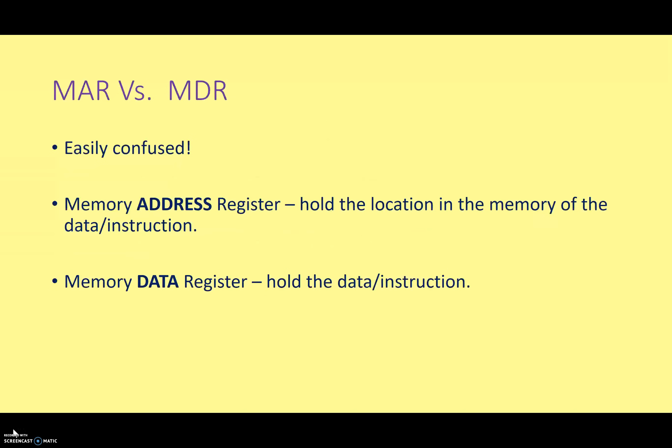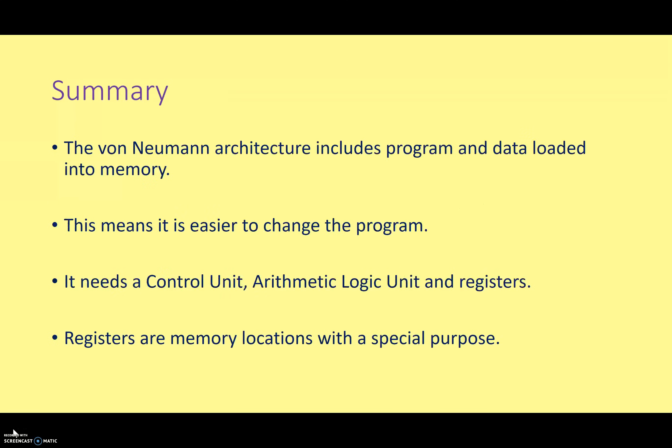It can be a little confusing when we talk about registers, especially the MAR and the MDR — they're very similar in name and the functions are easily confused. The key point is that the MAR, the memory address register, doesn't hold the data or the instruction — it holds the location in memory of the data or instruction; it holds the address. The MDR, the memory data register, on the other hand, actually holds the data or instructions — either taking data from RAM and holding it, or holding data such as the result of a calculation that's going to go back into memory. Feel free to do a little research on the internet to make sure you're comfortable with what these are.